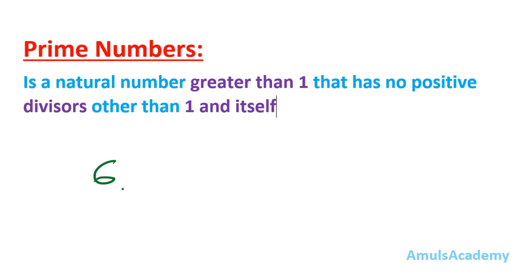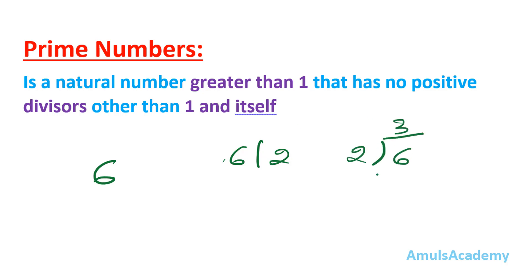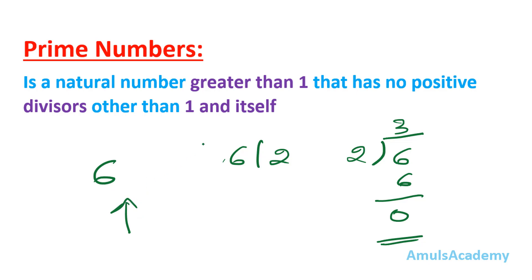6 is not a prime number because 6 has divisors other than 1 and itself. We can see that 6 is divisible by 2: 2 times 3 is 6, so we get remainder as 0. So 2 is a divisor of 6, and even 3 is a divisor of 6, other than 1 and 6. Since this number contains other divisors, it is not a prime number. I hope you are clear with the prime number concept.